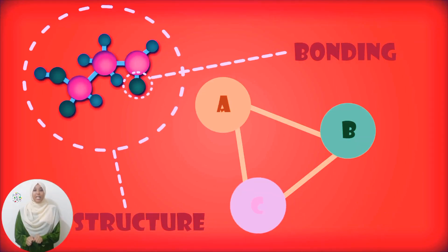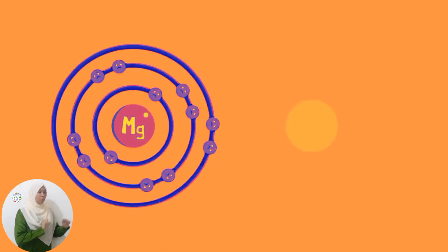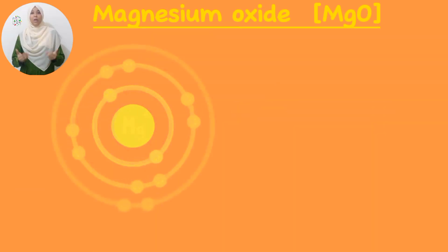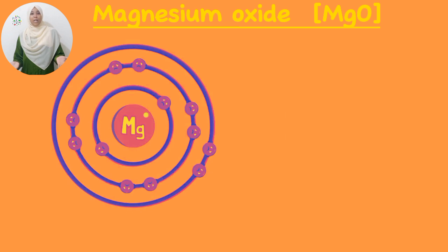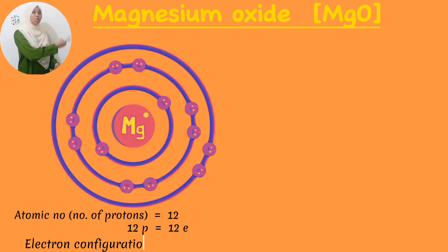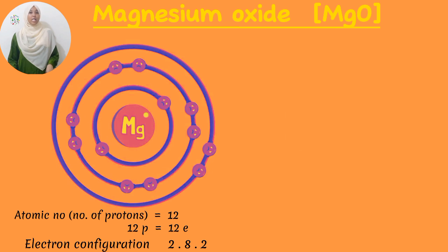Our next example is magnesium oxide. Let's start with magnesium. What is the atomic number of magnesium? 12. Electronic configuration: 2, 8, 2. How many valence electrons does magnesium have? 2.